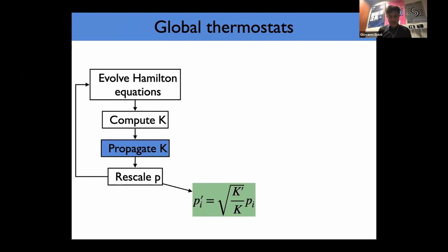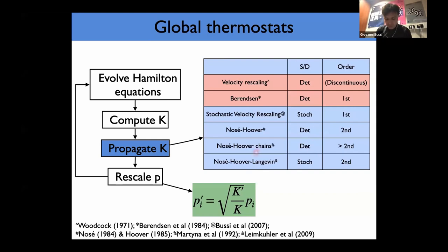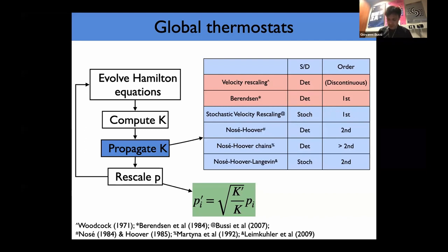Essentially all global thermostats can be implemented the same way: evolve Hamilton equations without a thermostat, compute the kinetic energy, propagate the kinetic energy (this is done differently depending on the thermostat), and then rescale the momentum with a factor depending on the new and old kinetic energies. Here is a table with examples. Velocity scaling and Berendsen are deterministic schemes, shown in red because they are well known for not producing the canonical ensemble — you don't get correct fluctuations. All the other schemes return correct fluctuations. Some are stochastic, some are deterministic. I will particularly focus on stochastic velocity rescaling, which is stochastic and first-order.